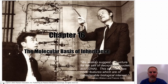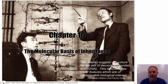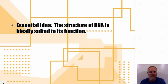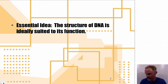In chapter 16 part one, we're going to talk about the molecular basis of inheritance. This picture shows Watson and Crick presenting the double helix, which they determined from investigative work drawing on a lot of other people's research. The main idea is that the essential structure of DNA is ideally suited to its function.